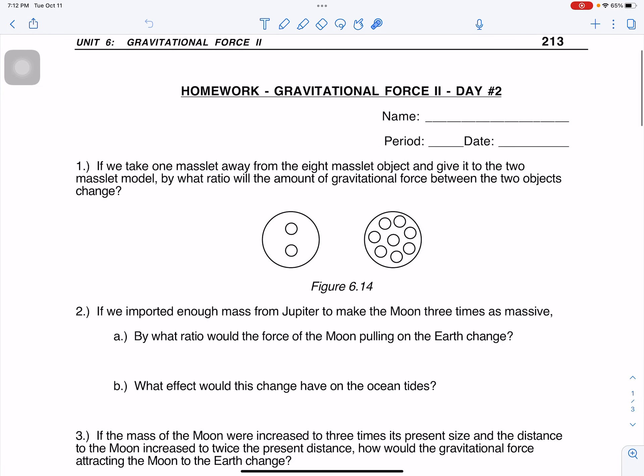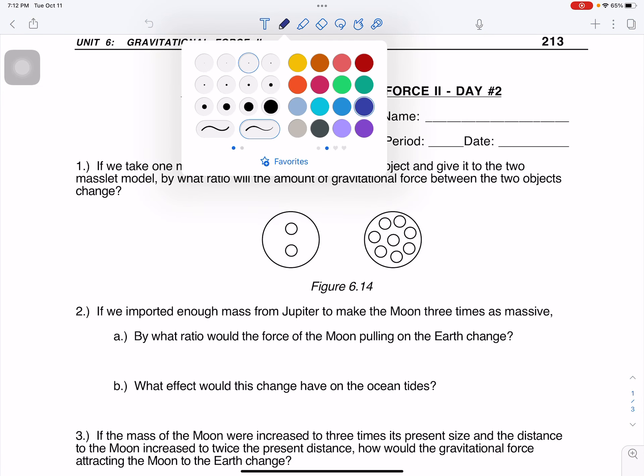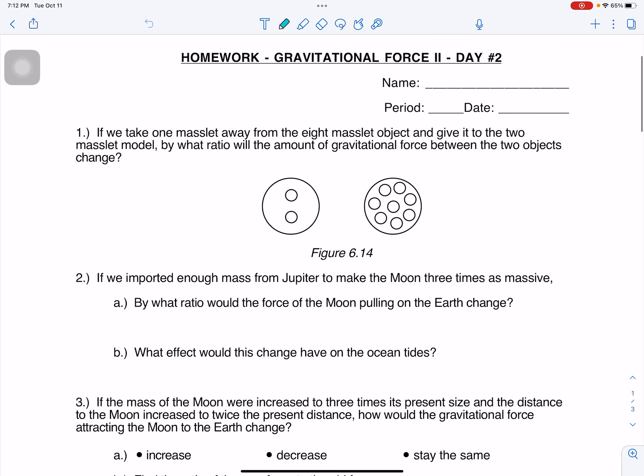Okay, so let's review the homework. If we take one mass slit away from the 8 mass slit object and give it to the 2 mass slit object, by what ratio will the amount of gravitational force between the two objects change?